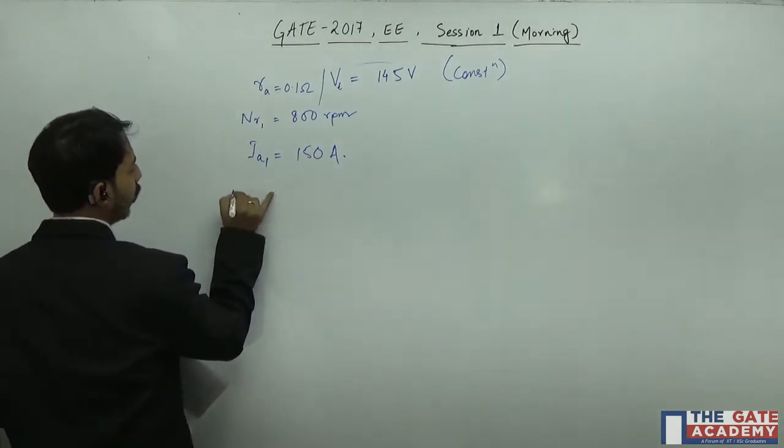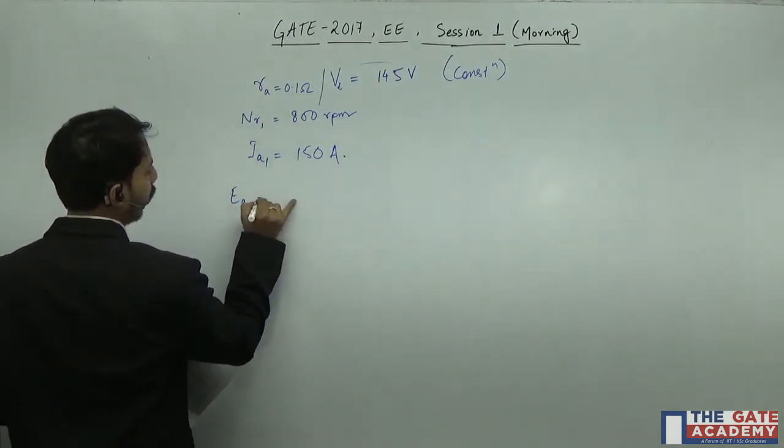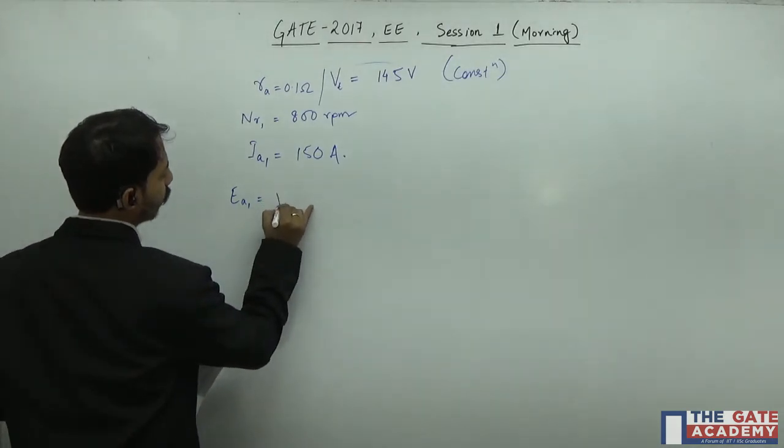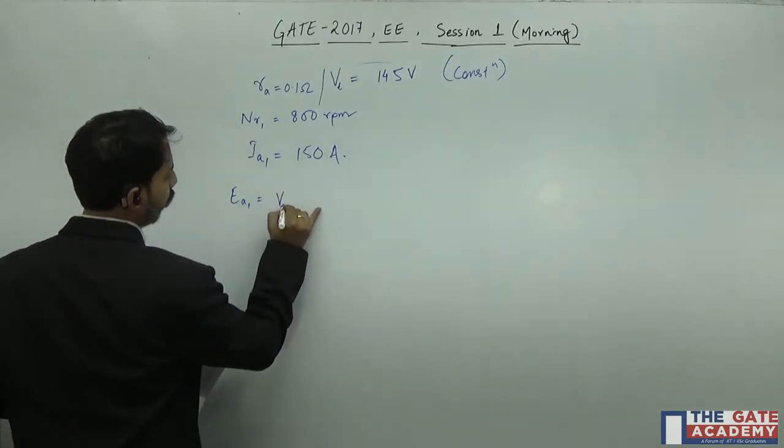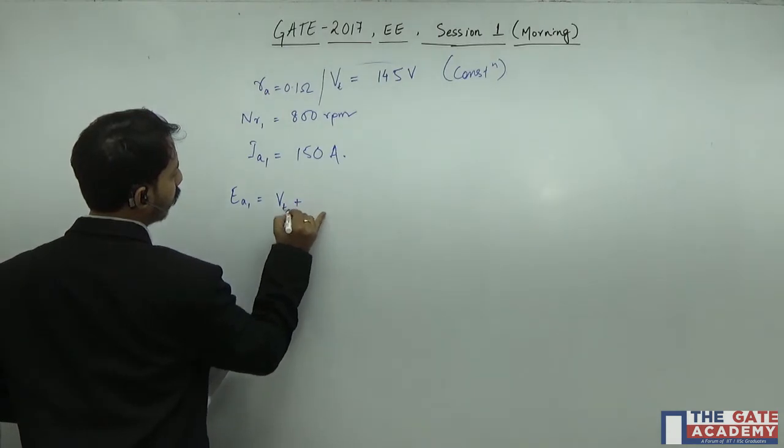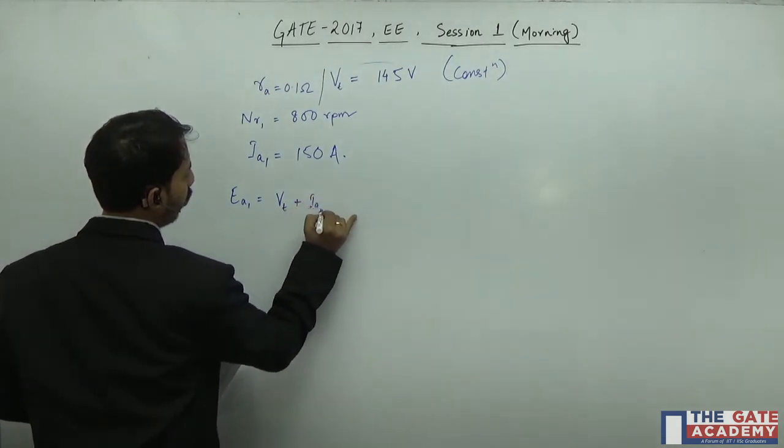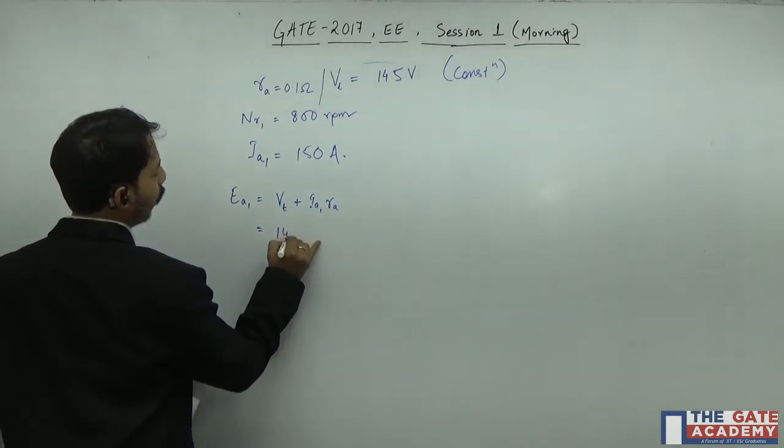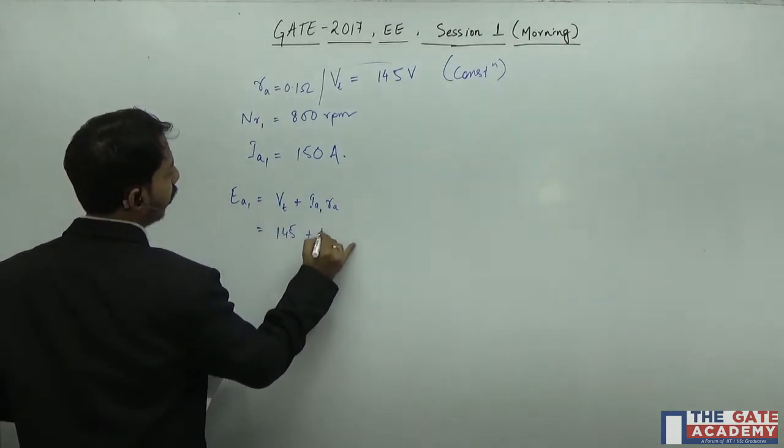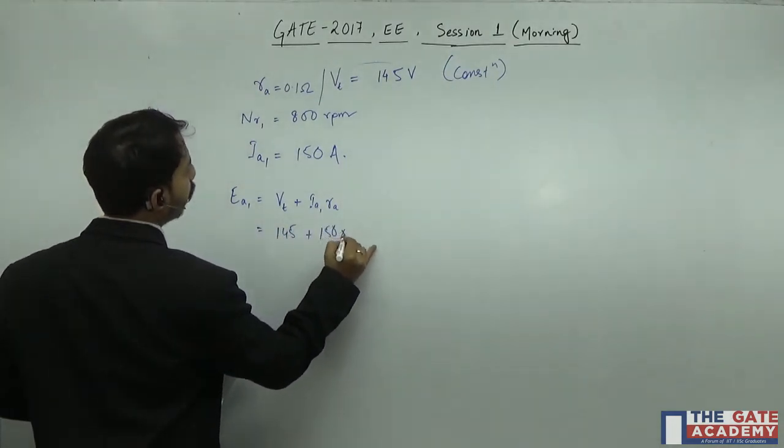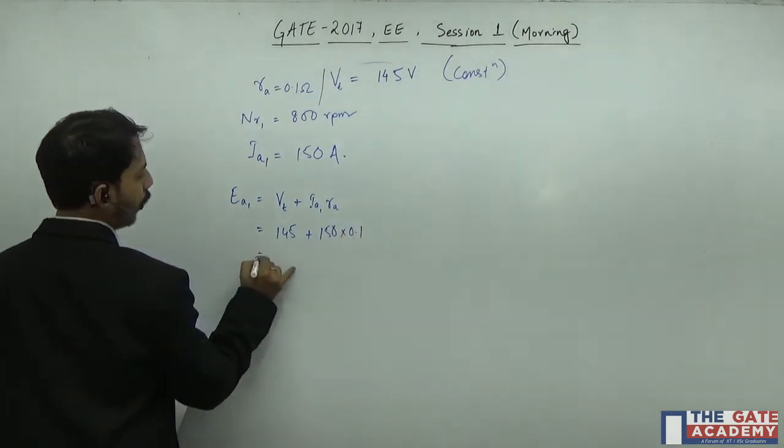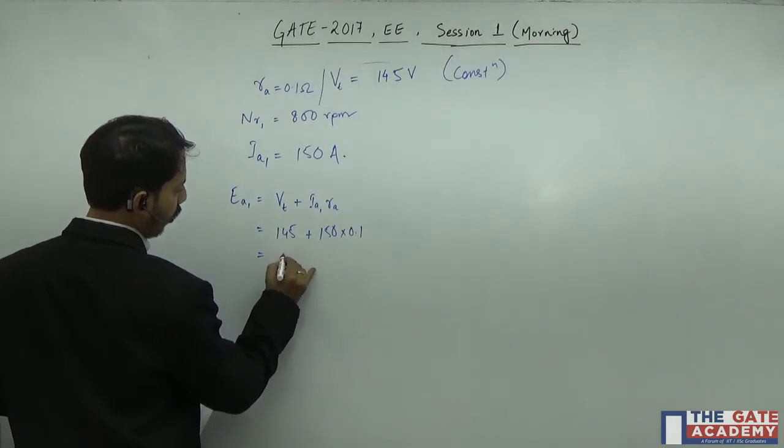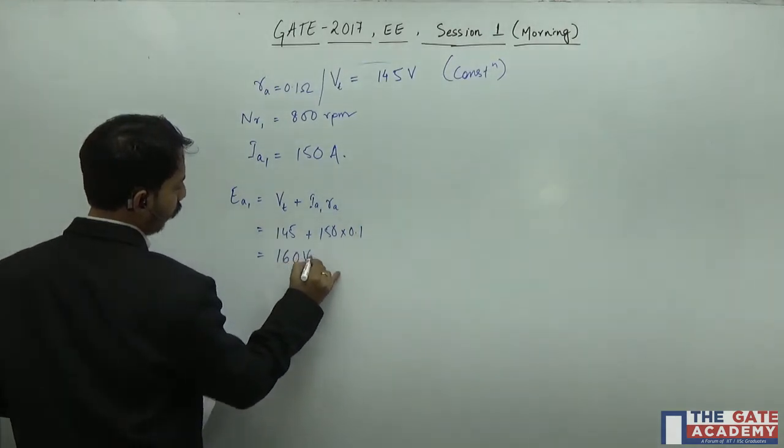In this case we can calculate the EMF. EMF will be VT plus IA1 into RA. VT we know is 145 plus I is 150 into 0.1, so it will be 145 plus 15 equals 160 volts.